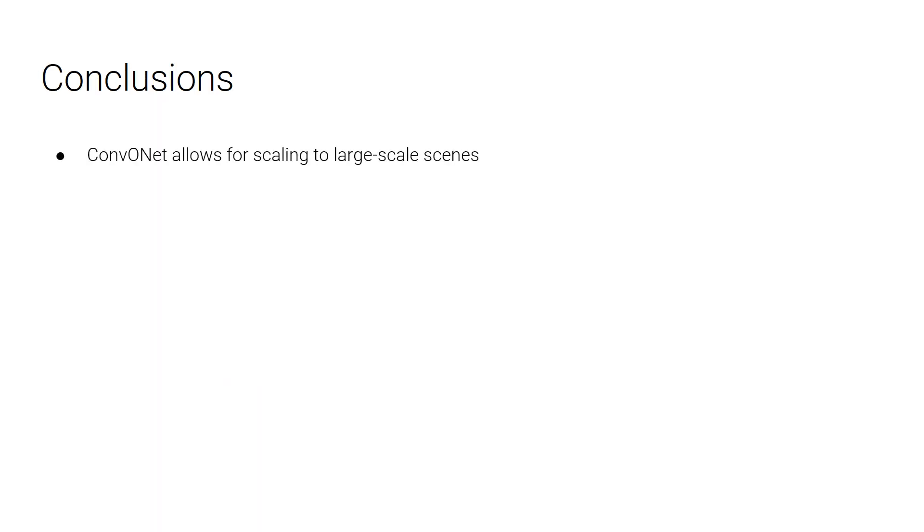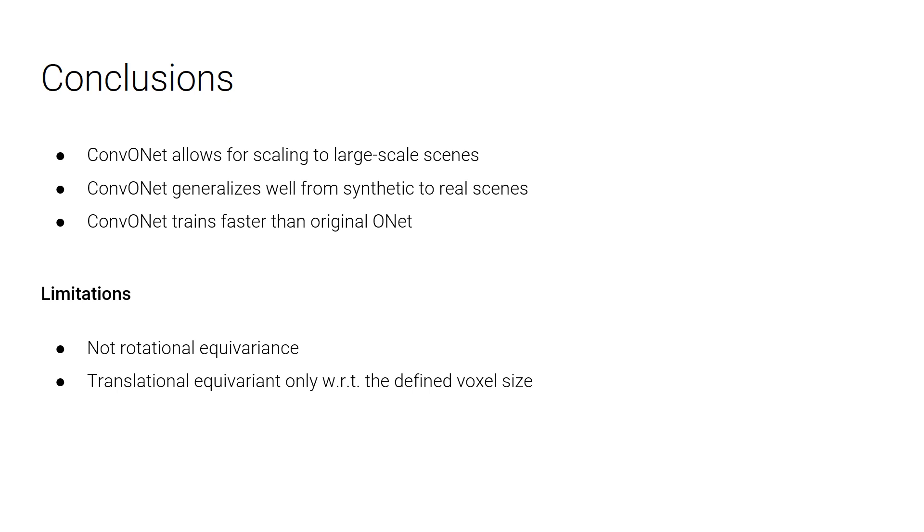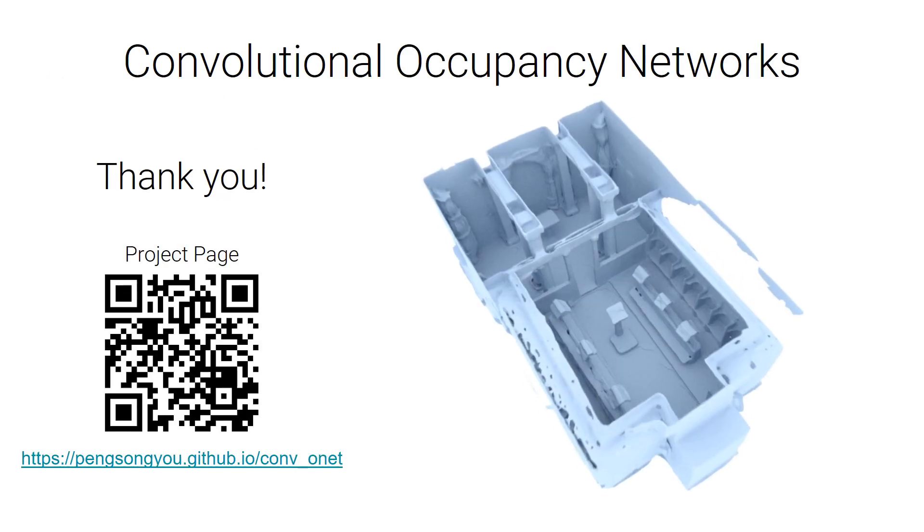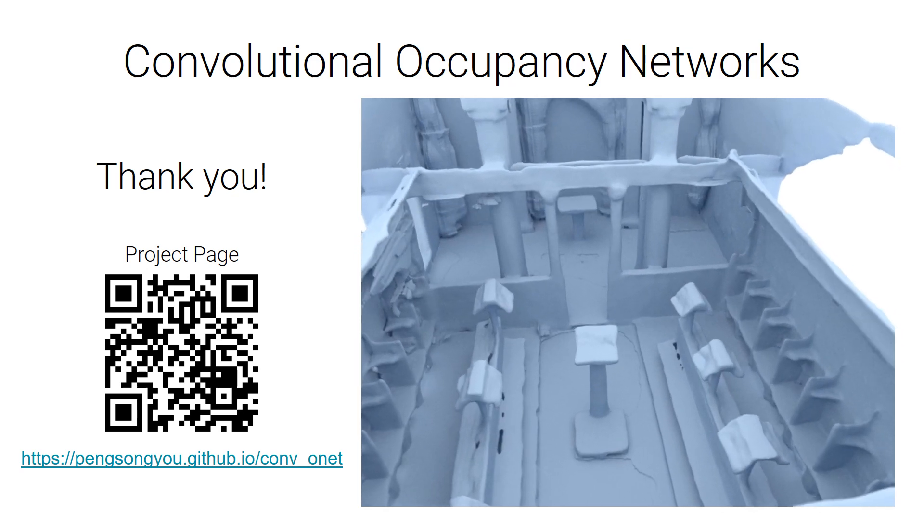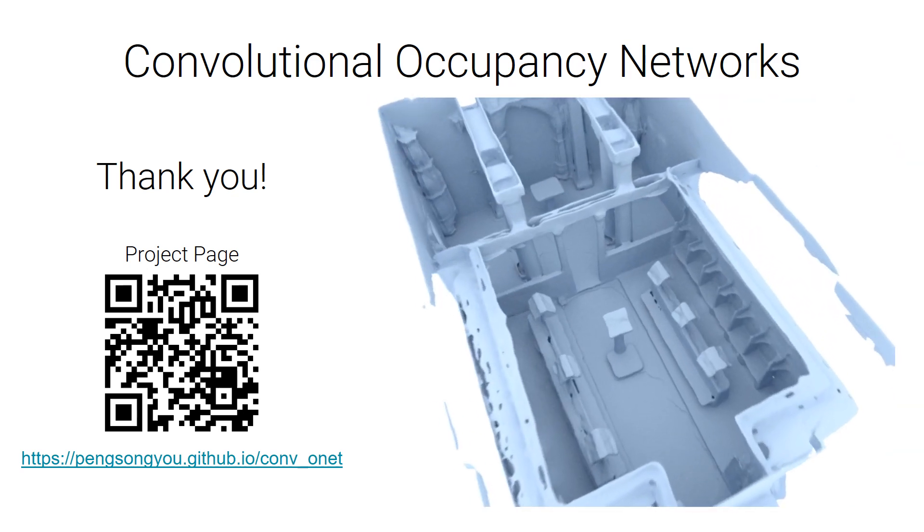To conclude, our convolutional occupancy networks can be scaled and generalized from synthetic to real-world scenes with any size, and can be trained faster than the original occupancy networks. However, inherited from convolutional operations, our method does not have the property of rotational equivalence, and is only translationally equivariant with respect to the defined voxel size. More information including code and data can be found on our project page. Thank you.